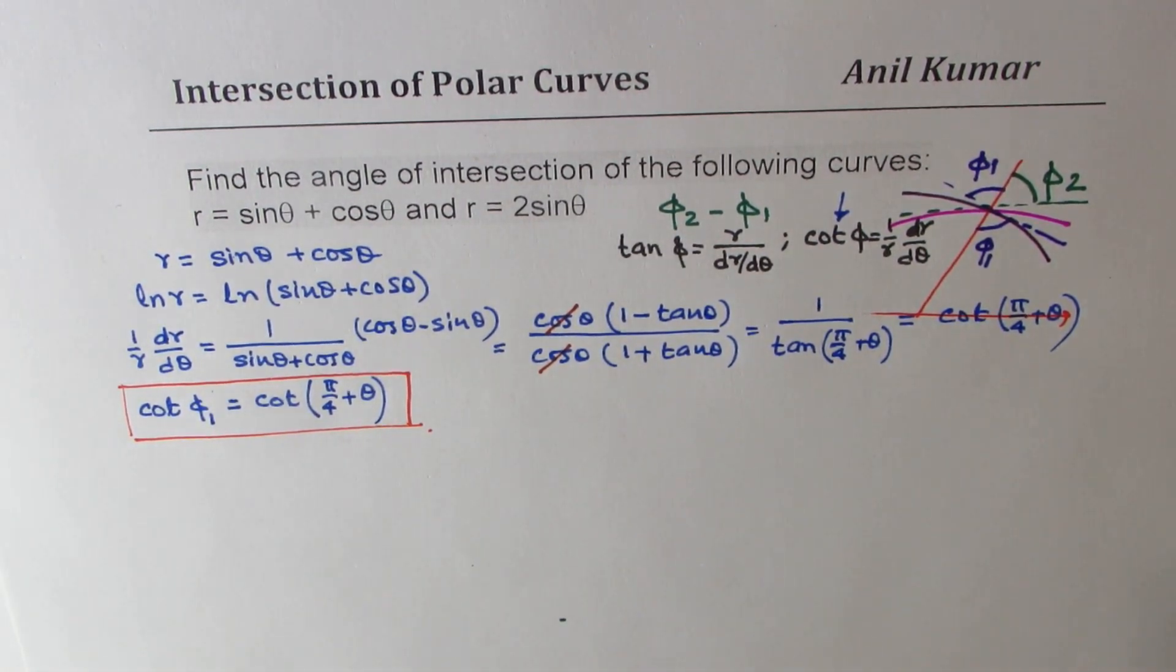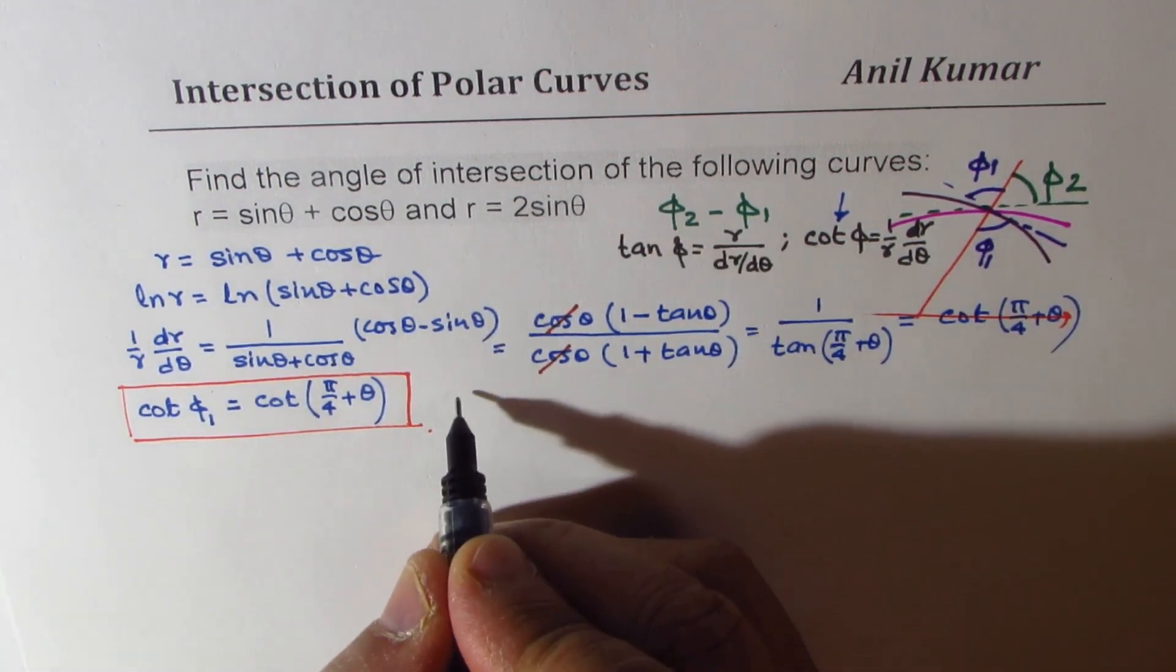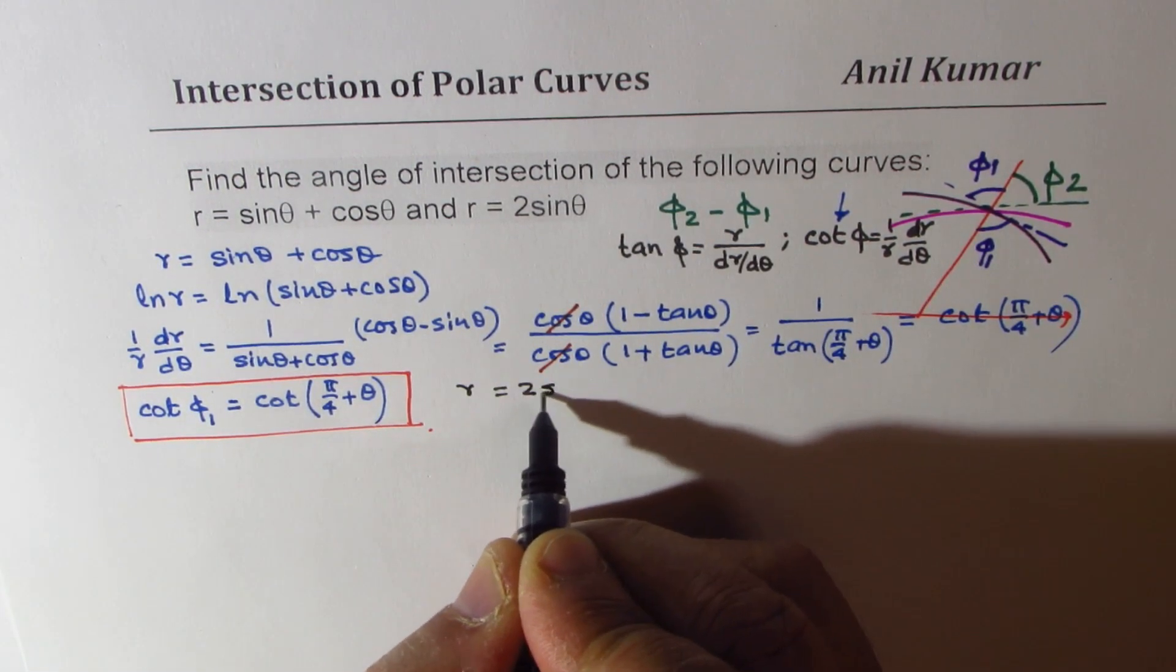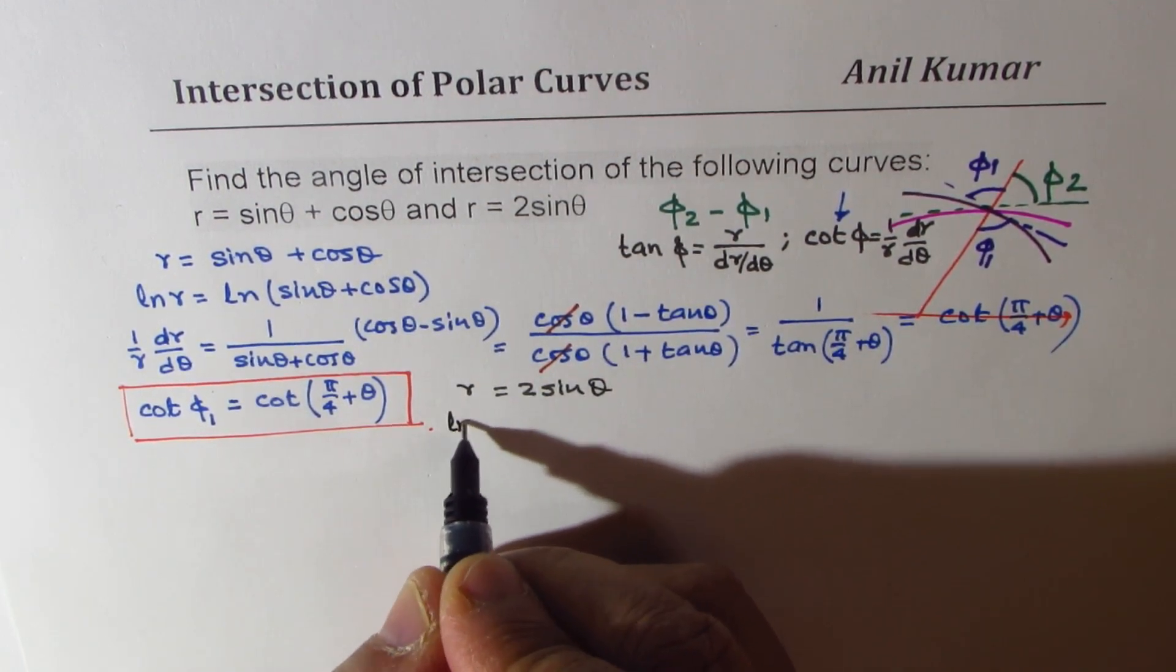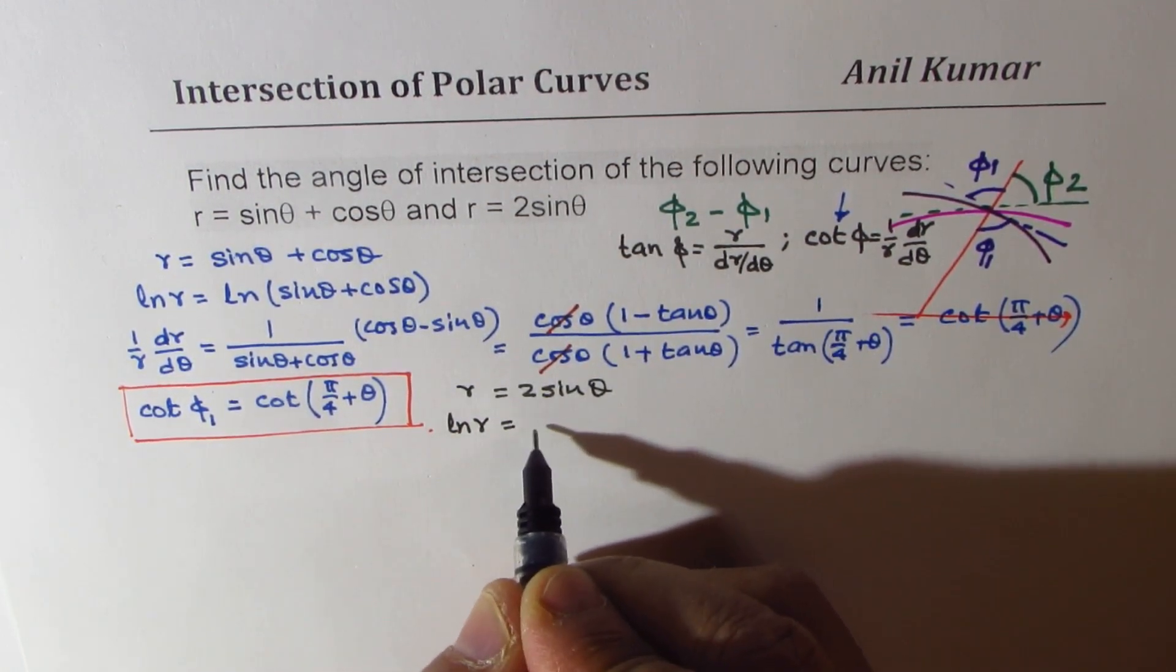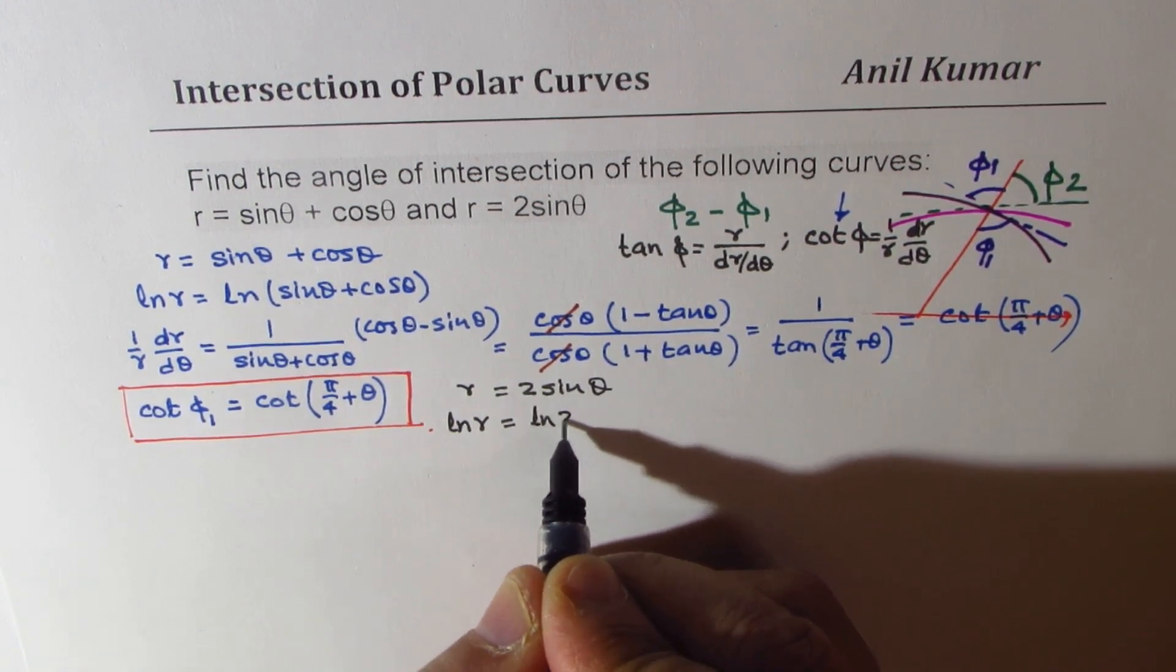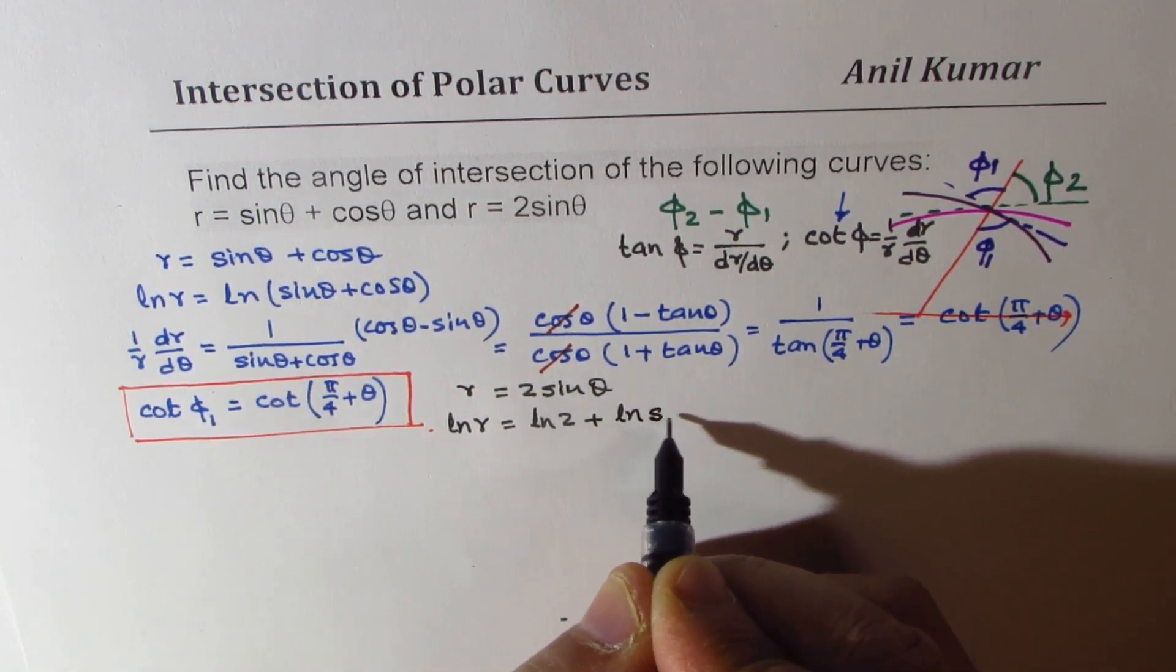Now, let's work with the second equation. The curve given to us is r equals 2 sine theta. We'll follow exactly the same steps, taking log, natural log we are always taking, ln r equals ln 2 plus ln sine theta.